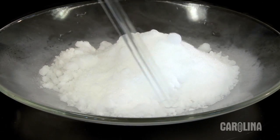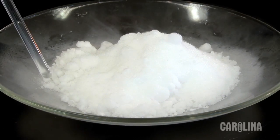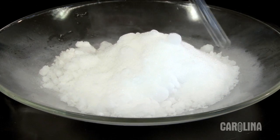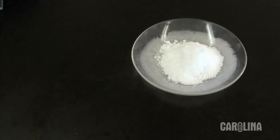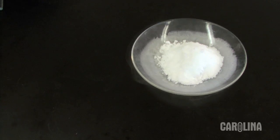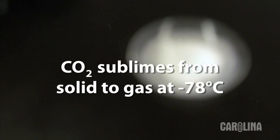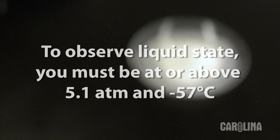Notice there's no liquid CO2 around the solid. At one atmosphere pressure, solid CO2 sublimes directly to gaseous CO2 at minus 78 degrees Celsius, hence the name dry ice. To see the liquid state, you have to be at or above 5.1 atmospheres of pressure and minus 57 degrees Celsius.